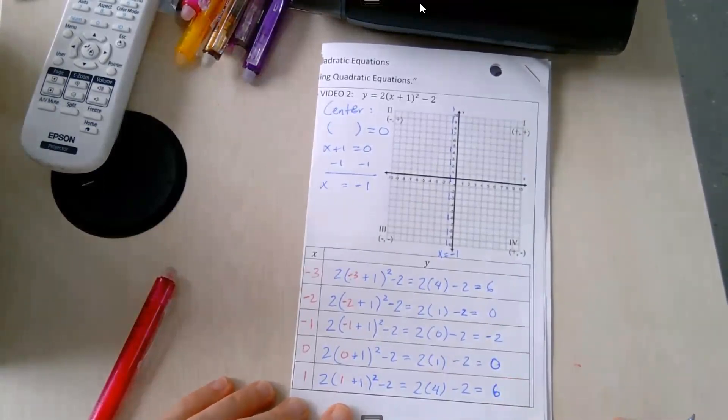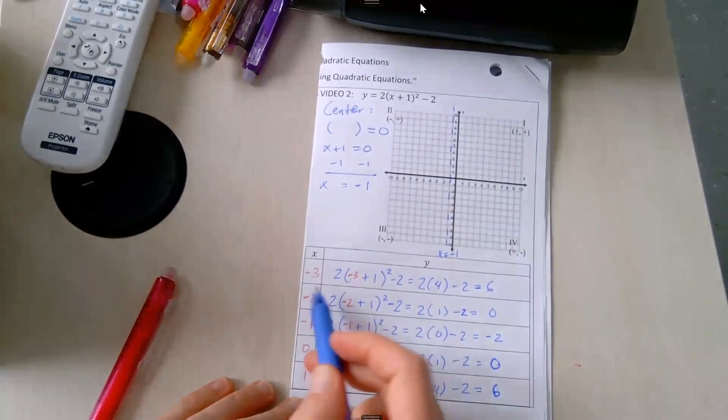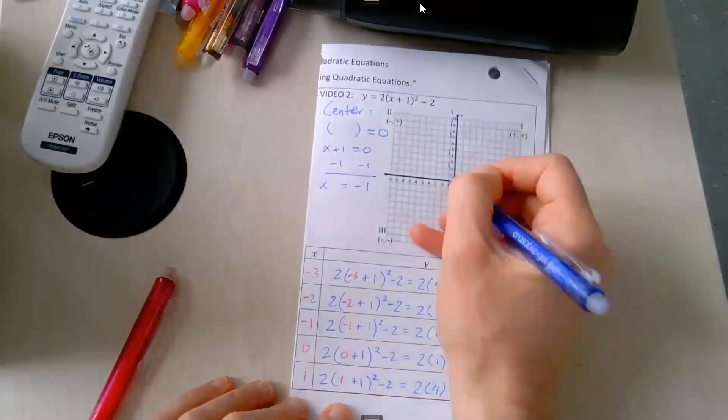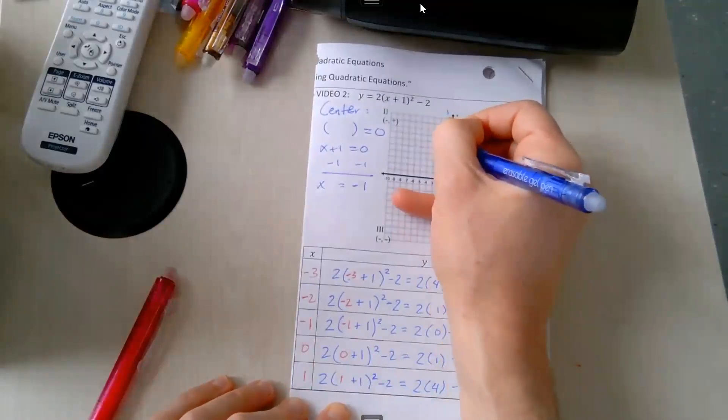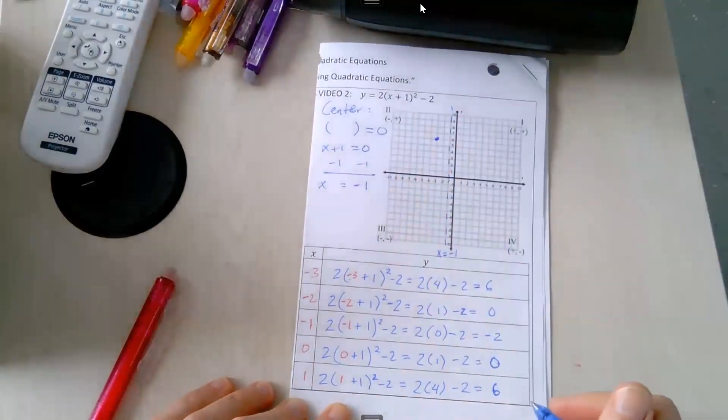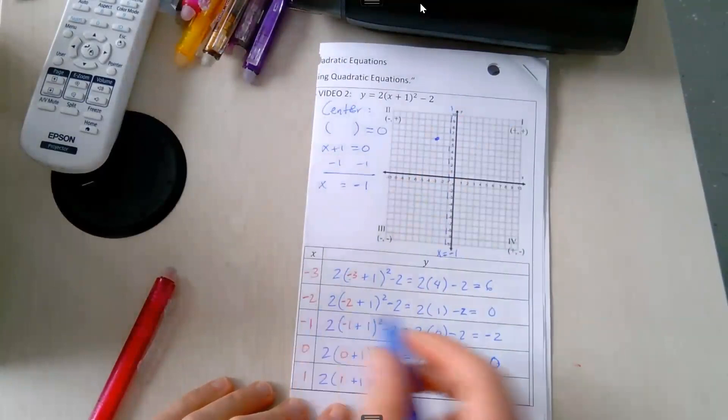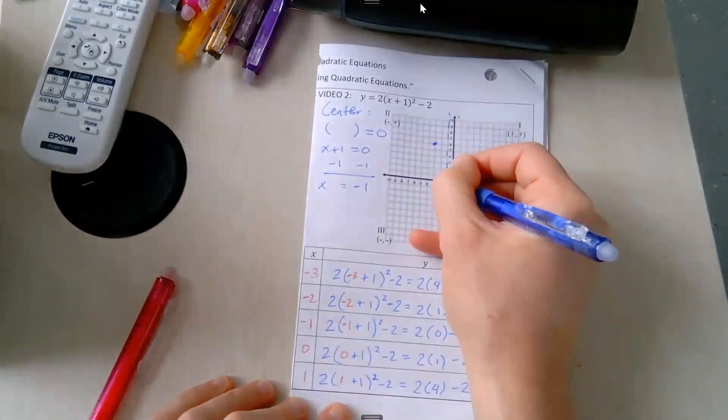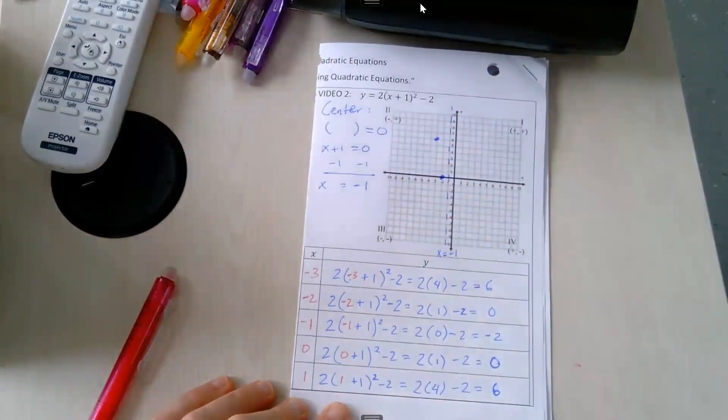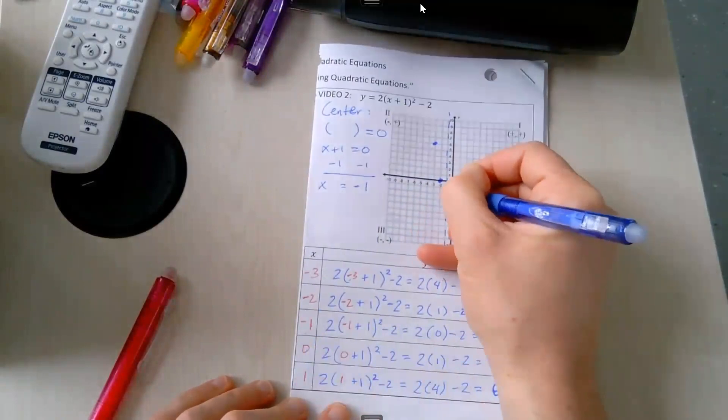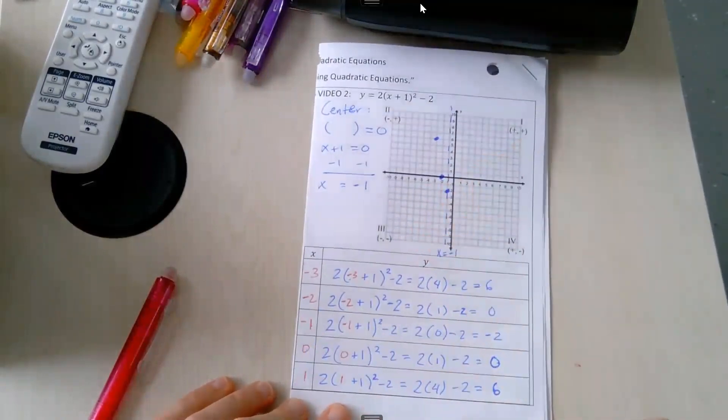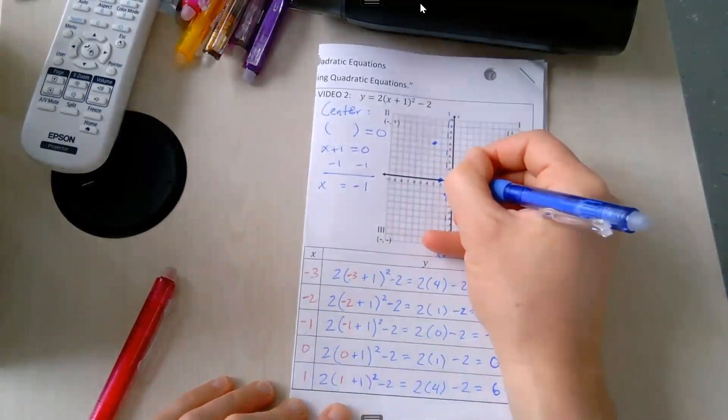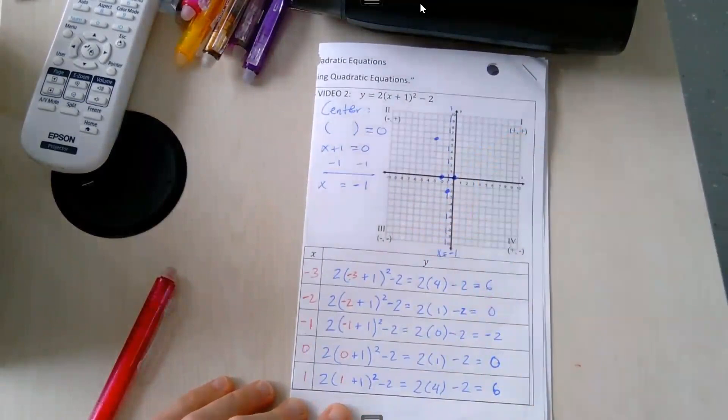Let's plot the points. At x equal negative 3, y equals 6. At x equal negative 2, y equals 0. At x equal negative 1, y equals negative 2. At x equal 0, y equals 0. And at x equal 1, y equals 6.